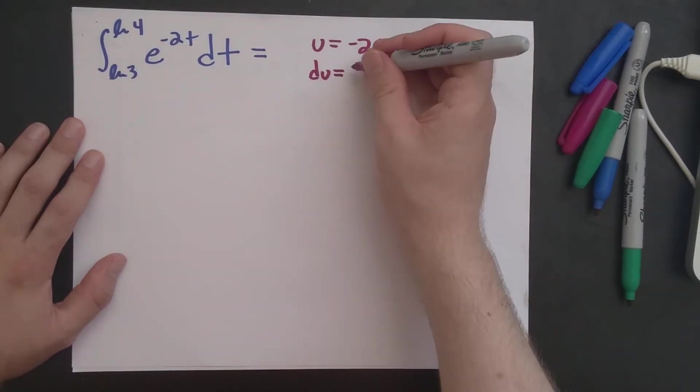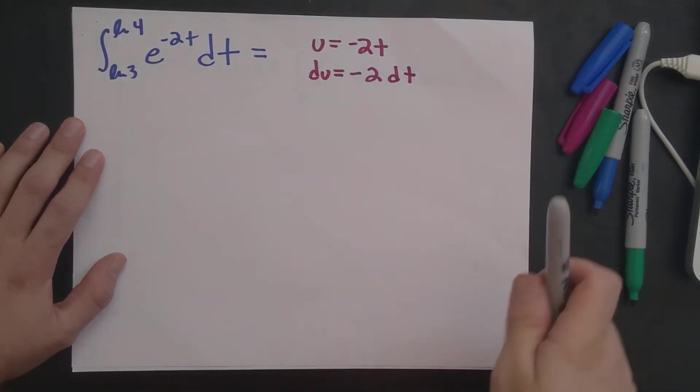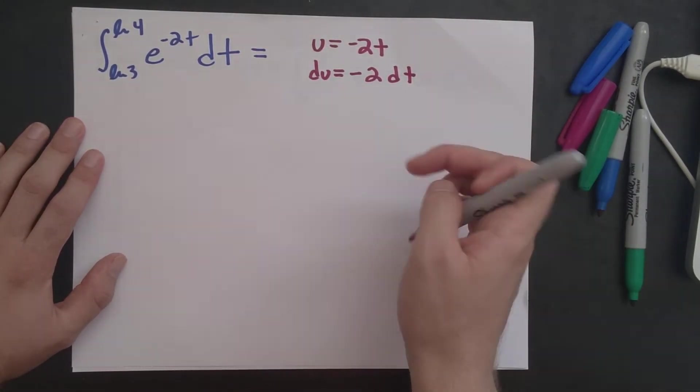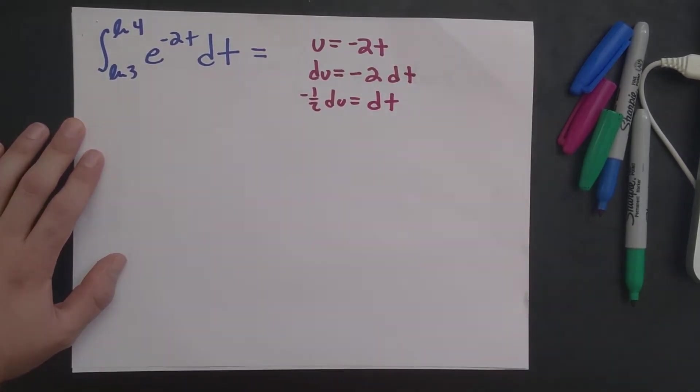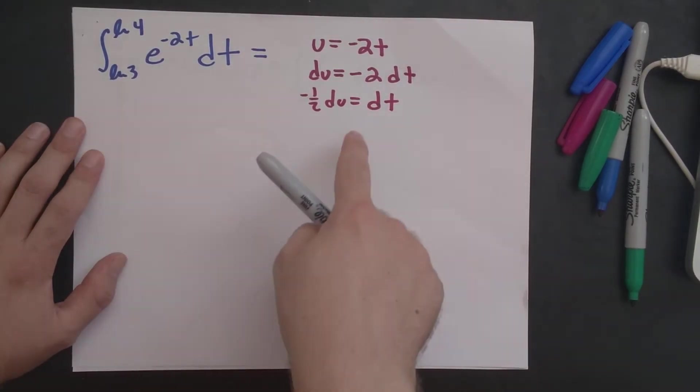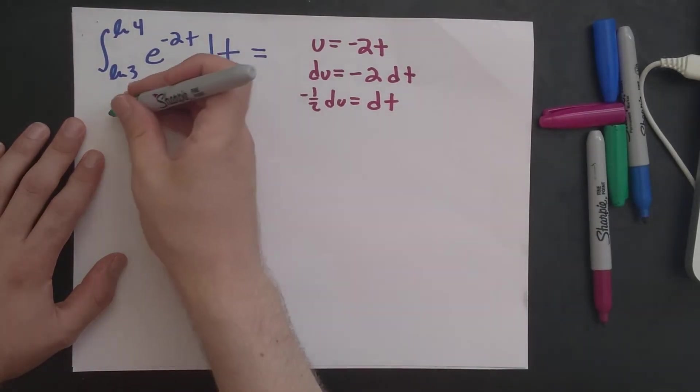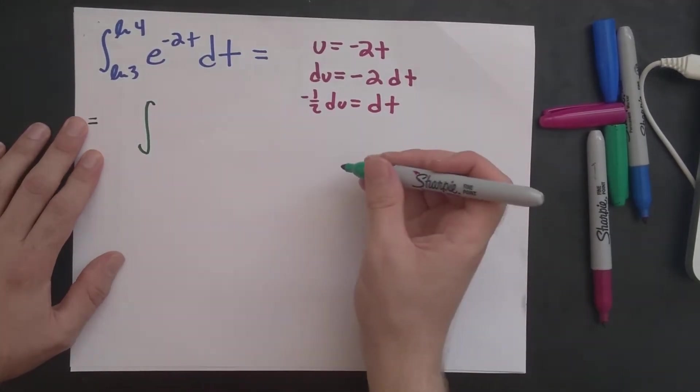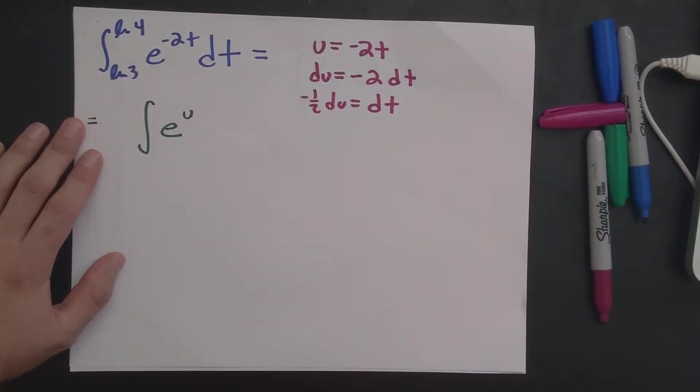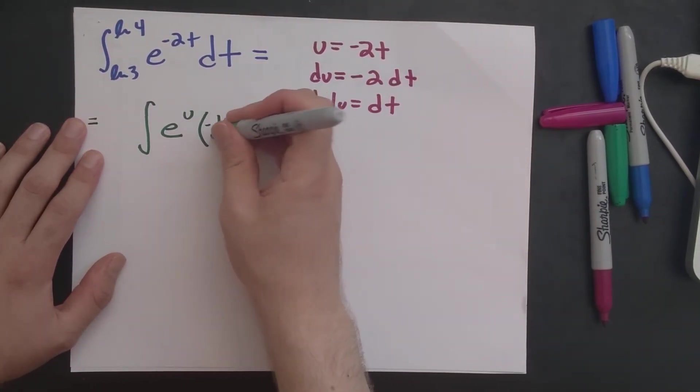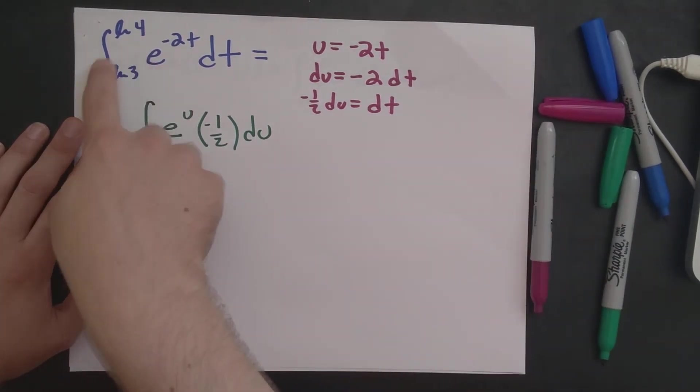And so then du is minus 2 dt. And so I guess I should say one more thing, minus 1 half du is equal to dt. And so now let's go ahead and make these changes over here. So we have the integral of e to the minus 2t is u. That's why we made a choice of u. dt is minus 1 half du.